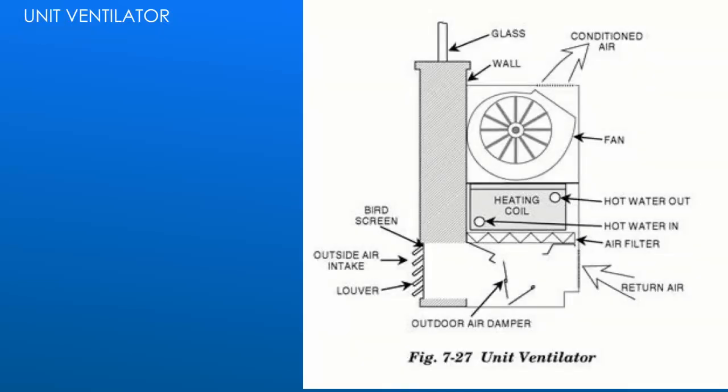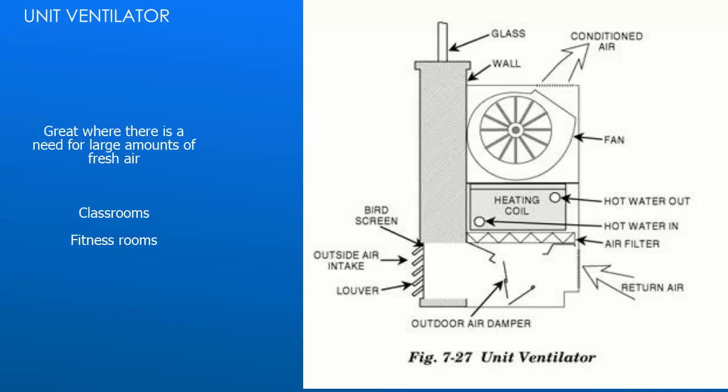Unit ventilators are always installed against an outside wall. Similar to the fan coil unit, the unit ventilator consists of a fan and a coil. The unit is placed against the outside wall and the wall to the outside of the building is opened to allow the system to introduce some outside air into the space. A set of dampers mix a proportion of outdoor air with the return air. The actual mixture may be varied from no outdoor air at all to perhaps 10% outdoor air with 90% return air, or even 50% of each, to the extreme of 100% outdoor air. The thermostat or wall sensor controls both the flow of hot water through the coil and the mixture or blend of the air streams.